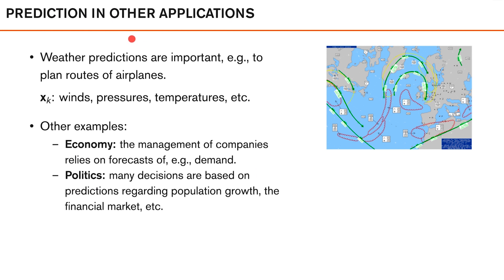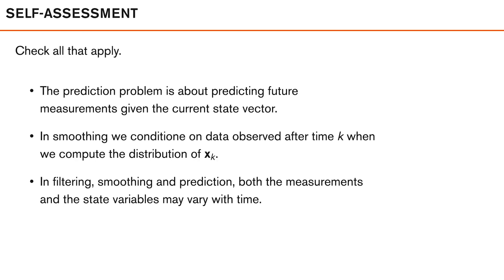For predictions in other applications, a familiar example is weather prediction — predicting winds, pressure, and temperatures for coming days. This also illustrates that predictions are always harder than filtering or smoothing, since we have access to less data. In economics, company management relies on forecasts of product demand to make decisions. In politics, many decisions are based on predictions regarding population growth and financial markets. These are all examples of the prediction problem, and here is a self-assessment question to check your understanding of the differences between these related problems.